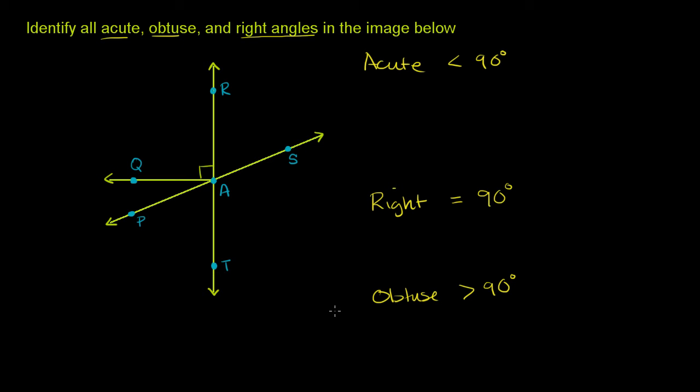And it is less than 180 degrees, or you could view it this way: it is greater than 90 degrees, or 90 degrees is less than an obtuse angle, and an obtuse angle is less than 180 degrees. And they don't ask us about this, but if you have an angle that is 180 degrees, it forms a straight line, and that really is called a straight angle.